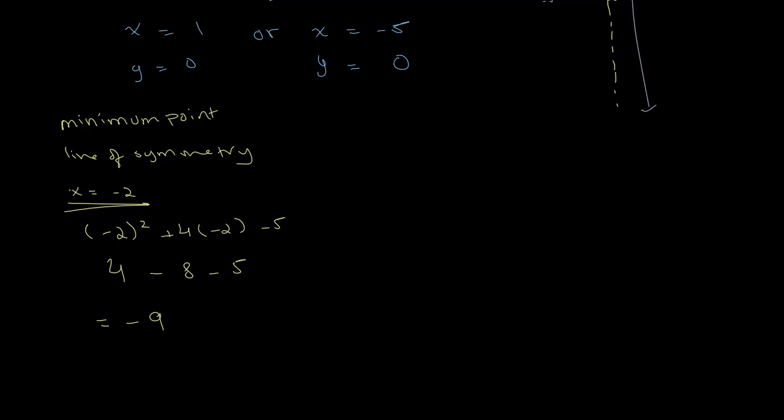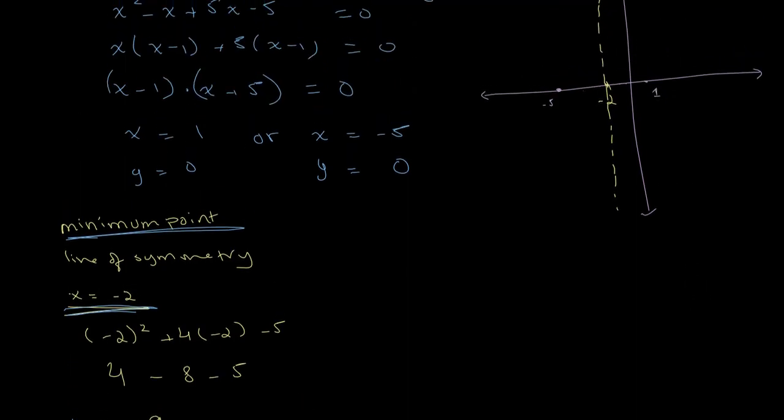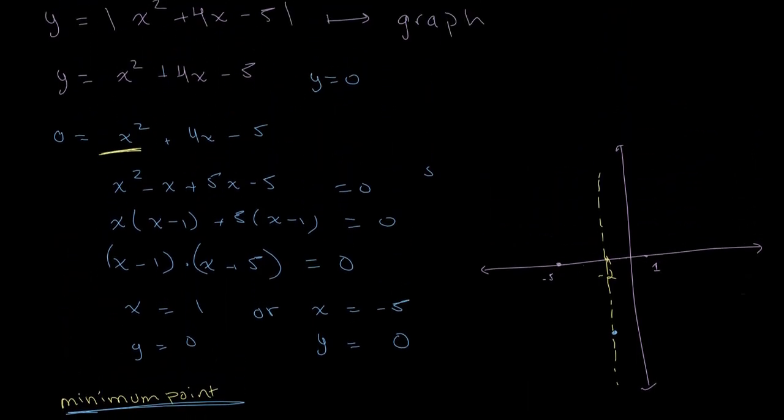Therefore, the coordinates of our minimum point are x equals negative 2 and y equals negative 9. So minimum is (minus 2, minus 9). Let's draw that on our graph. Minus 9 will be around here. So now what we want to do, as I mentioned earlier, is simply draw the graph normally.